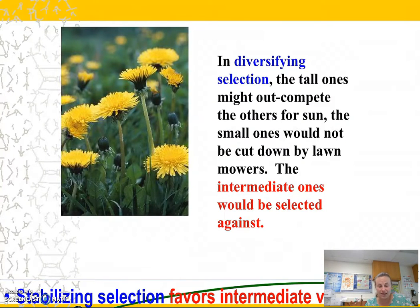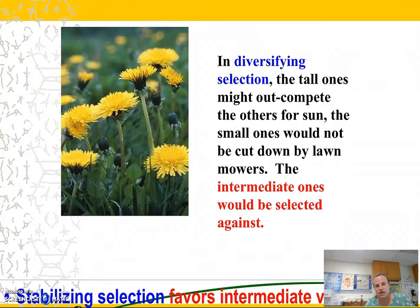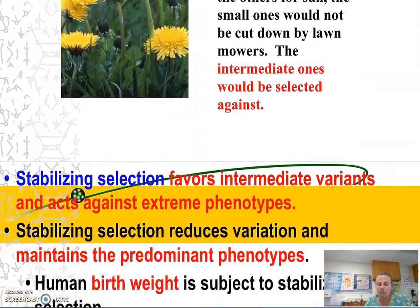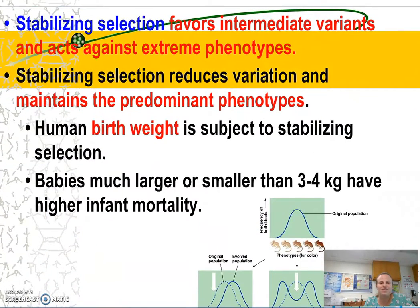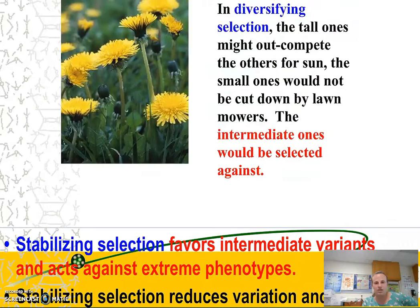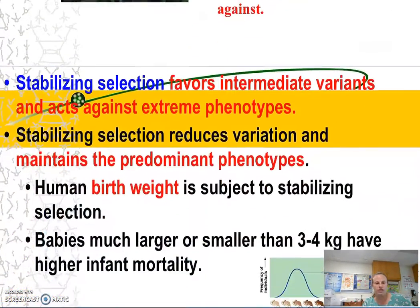What diversifying selection can result in is called balanced polymorphism, where two extreme phenotypes are favored. For example, dandelions: really tall dandelions can out-compete others for sun, and really small dandelions won't be cut down by the lawnmower, but intermediately sized dandelions probably won't survive. Then there's stabilizing selection, which favors intermediate variants and selects against the extreme phenotypes chosen during diversifying selection.